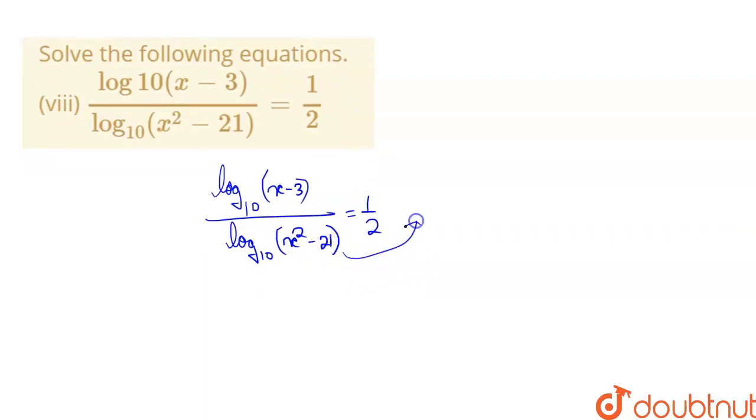Let's put the denominator on the right hand side. Log base 10 of x minus 3 equals 1 by 2 log base 10 of x squared minus 21. Now we can take 1 by 2 into the power.